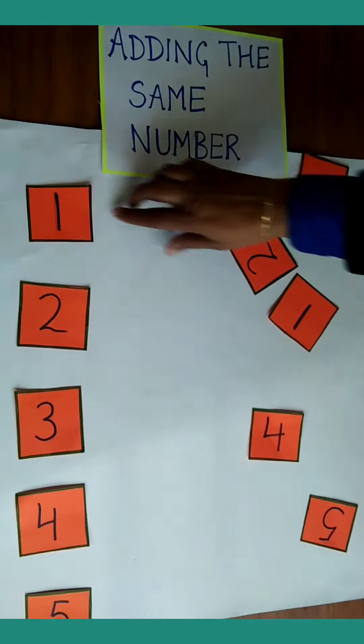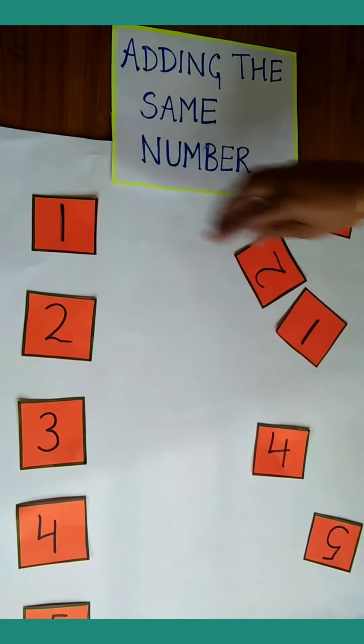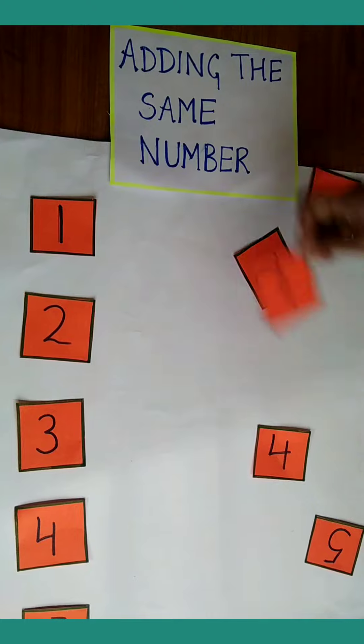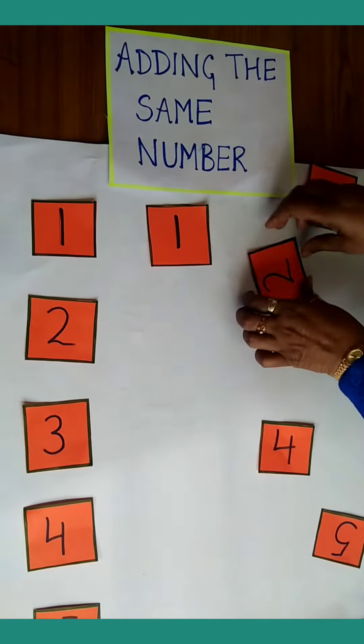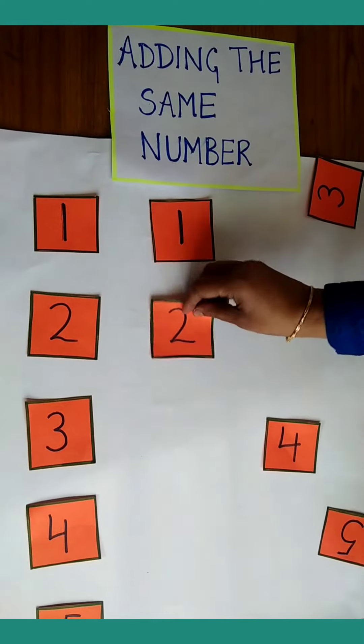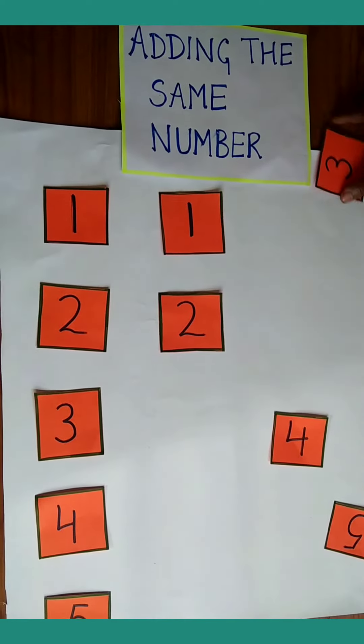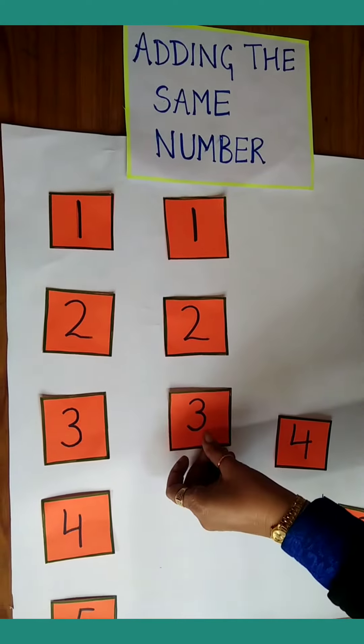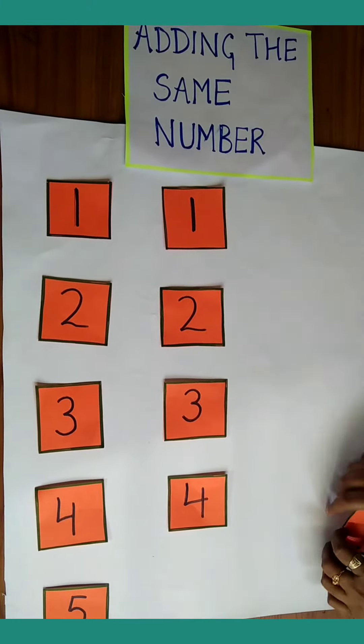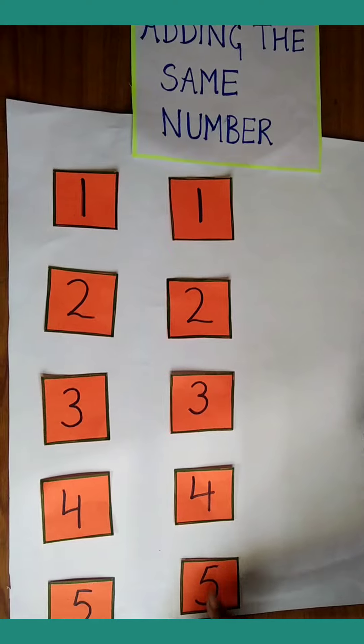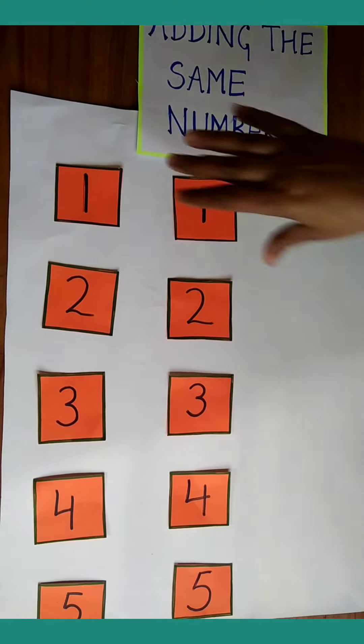We match the same number. This is number 1, we match number 1. Number 2, we match number 2. Number 3, match with 3. Number 4, and last 5. Now we add the same number.